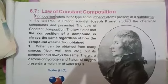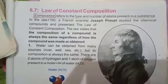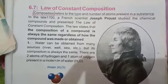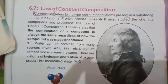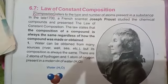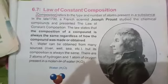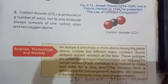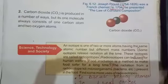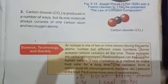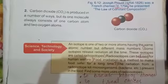Its composition will always remain the same whether it is obtained from any source — a river, well, sea, etc. Similarly, carbon dioxide is produced in a number of ways, but its one molecule always consists of one carbon atom and two oxygen atoms.